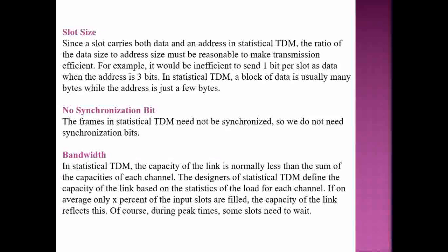Regarding bandwidth in statistical TDM: the capacity of the link is normally less than the sum of the capacities of each input channel. The designers of statistical TDM define the capacity of the link based on statistics of load for each channel. If on average only X percent of inputs are active, the capacity of the link is set accordingly. During peak times, some slots may need to wait.